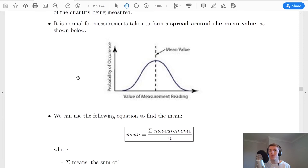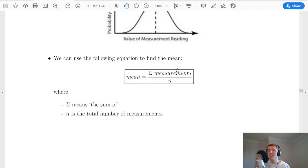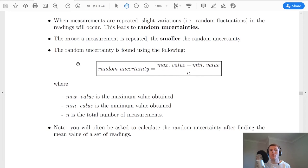Now it's normal for measurements taken to form a spread around the mean value as shown in this picture here. So if you were to take say 100 measurements of something then they would form a bell curve that looks a bit like this, and your mean value would appear in the middle. So that would be your best estimate of the true value if you take the mean down the middle. Now to find the mean, all we do is we add up all the measurements and we divide by how many measurements there are.